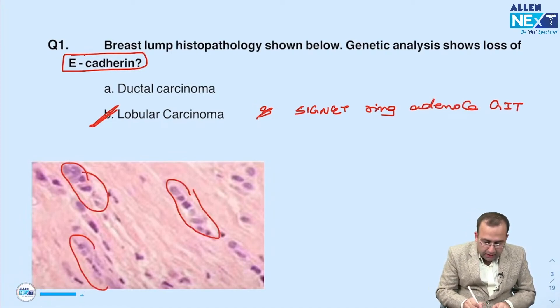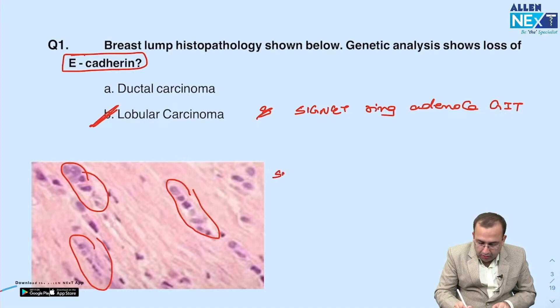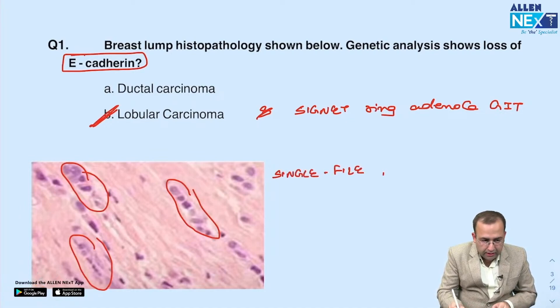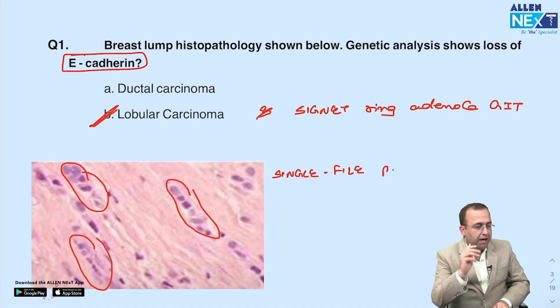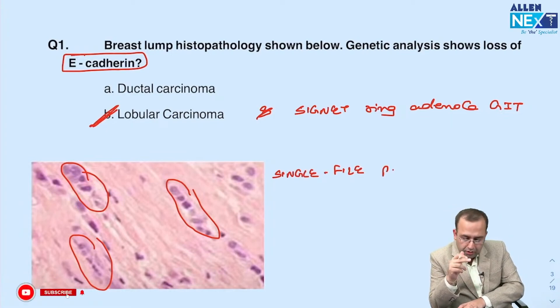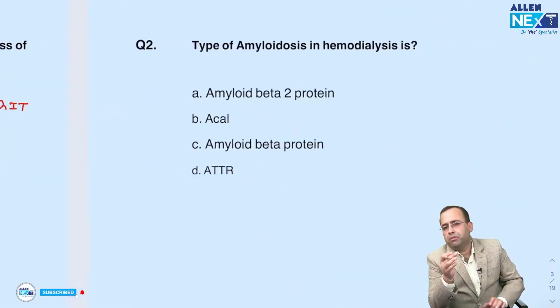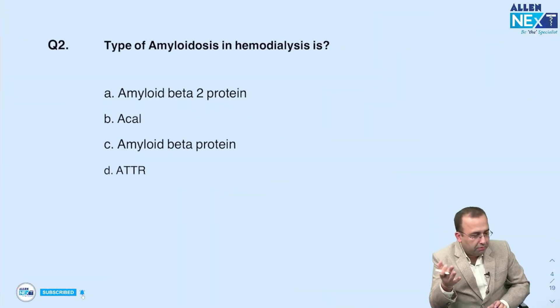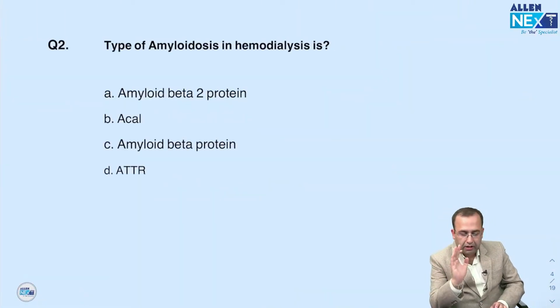In signet ring cell adenocarcinoma of the GIT, what do we see in microscopy? All the cells are present in a single file pattern — the cells are in single file pattern.